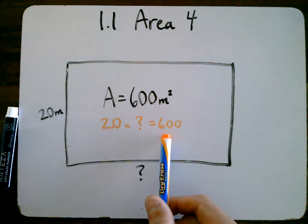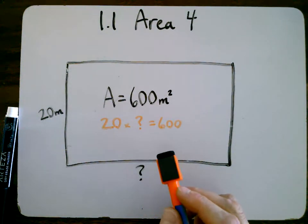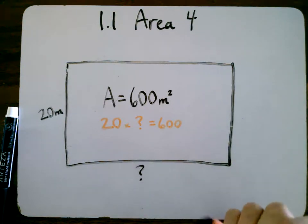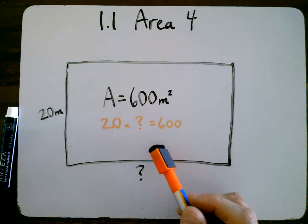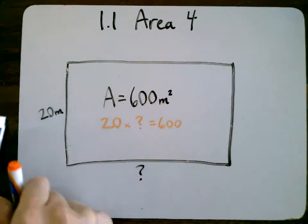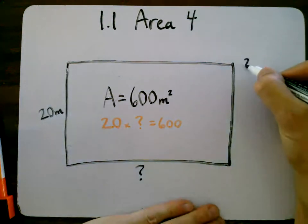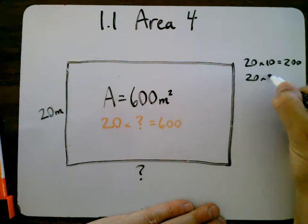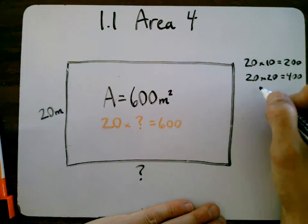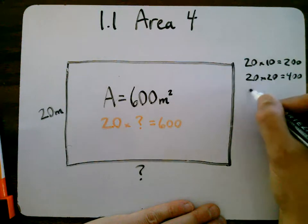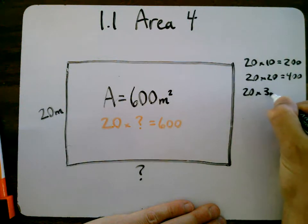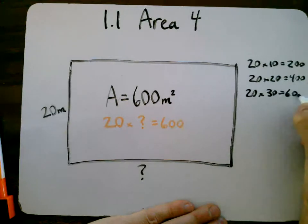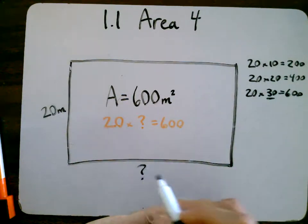Hmm, so we need something three times more than that. You could do 20 times 20 if you want. So we tried 20 times 10 and that gave us 200. We could try 20 times 20, and we know this is going to be just double that, that's going to be 400. Then the next number up would be 20 times 30, and that actually is 600. And so that tells us that this side here is 30 meters.